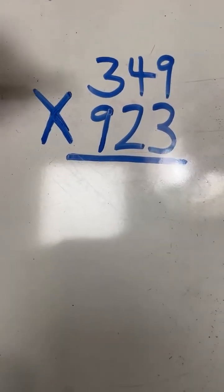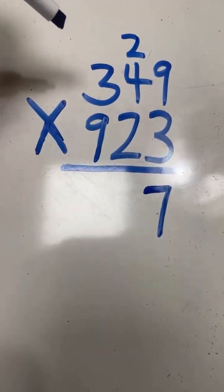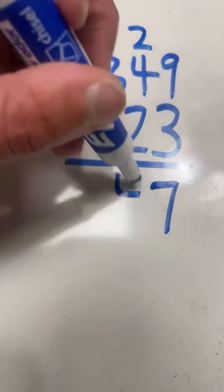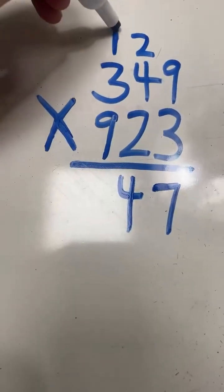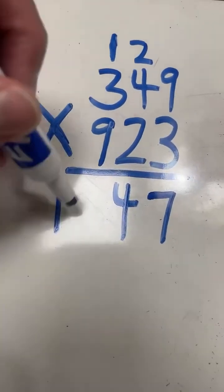So starting in the ones place, 9 times 3 equals 27. 7, carry the 2. 4 times 3 equals 12, plus 2 equals 14. 4, carry the 1. 3 times 3 equals 9, plus 1 equals 10.